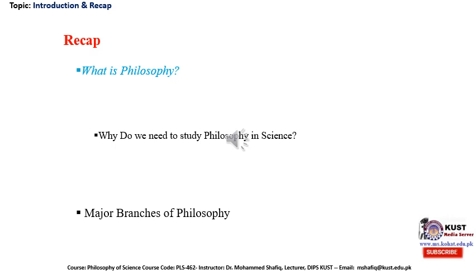Philosophy has two objectives in view: one, to sort a theory which helps us understand the nature and structure of the universe; and two, to search a system of conduct and values which should help us lead life in the best possible way. Philosophy deals with the sphere of speculation from which many ideas are taken up by science to be tested and proved or disproved. Science only deals with certainties, while philosophy deals with many important questions on which there never can be certainties. Uncertainty has as much a role to play in life as certainties.